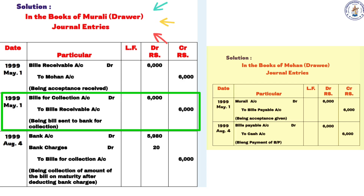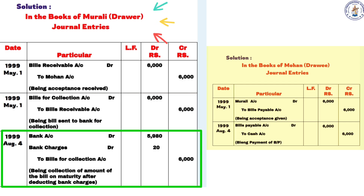The bill is dated May 1st and collection is due August 4th. On maturity entry: Bank Account Dr. and Bank Charges Account Dr. to Bills for Collection Account — being collection amount, the bill honored on maturity after deducting bank charges.